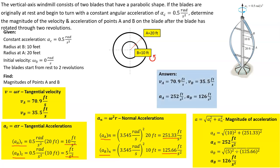Our final answers: for point A, the velocity is 70.9 feet per second and the acceleration is 252 feet per second squared. For point B, the velocity is 35.5 feet per second and the acceleration is 126 feet per second squared. Remember, that's at two revolutions — those blades are still accelerating, so as it continues to rotate, those values will keep changing. This is Professor Cummings, and that was just one more example. Go ahead and like and subscribe, and I will see you on the next video.